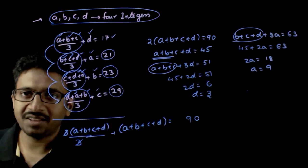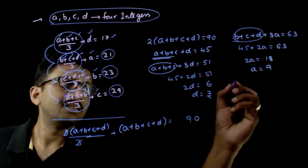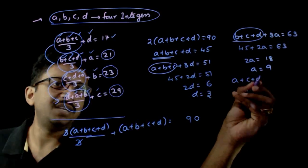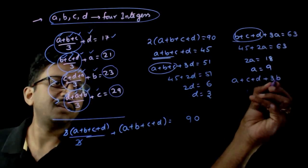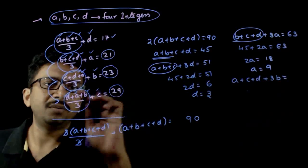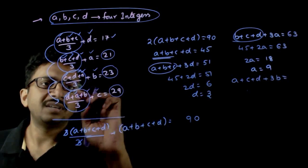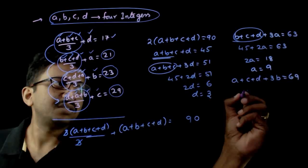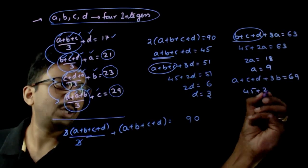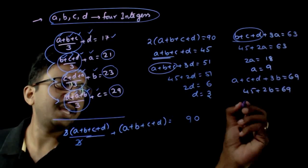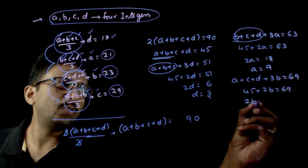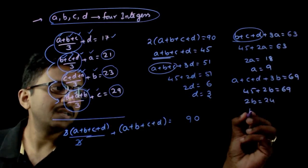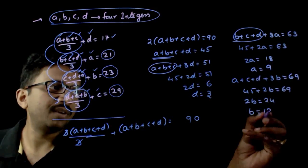Similarly, taking the third expression: a + c + d + 3b = 3 × 23 = 69. So 45 + 2b = 69, giving 2b = 69 − 45 = 24, and therefore b = 12.